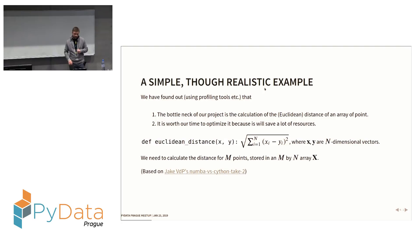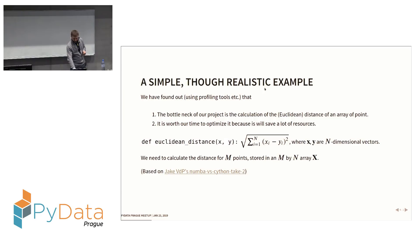The test example I'm using — actually borrowed from Jake VanderPlas's talk — is a Euclidean distance calculation of a set of vectors. We are at the point where we've identified this as the bottleneck, so let's try to optimize it.